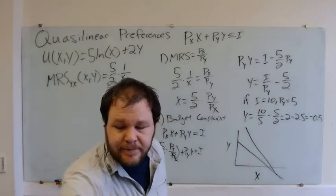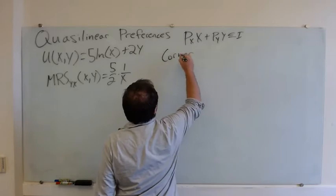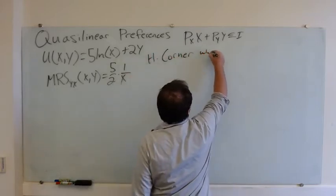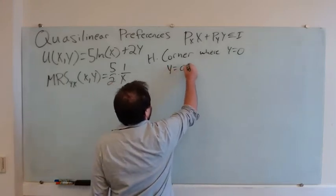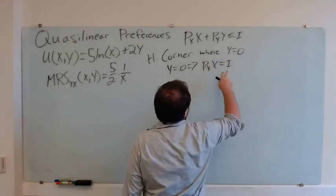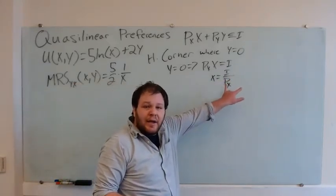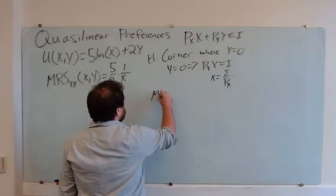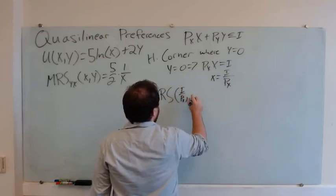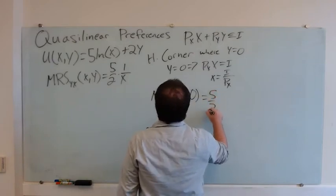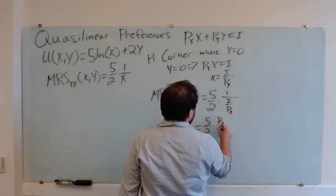Since we ruled out the corner where x equals 0, let's consider the horizontal corner where y equals 0. If y equals 0, then PX times x has to equal I — if we use our whole budget — which means x equals I over PX. Then we calculate our MRS at that point and see whether it's greater or smaller than the price ratio. So MRS at x equals I over PX and y equals 0 is 5/2 times 1 over (I over PX), which equals 5/2 times PX over I.